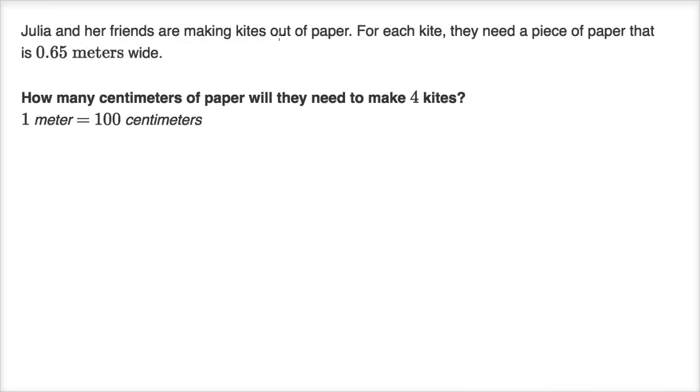Julia and her friends are making kites out of paper. For each kite, they need a piece of paper that is 0.65 meters wide. How many centimeters of paper will they need to make four kites? So they tell us how wide the paper is in meters for each kite, but they want the answer in centimeters, and they want it for four kites. So let's think about this a little bit. Each kite is 0.65 meters.